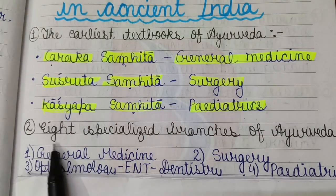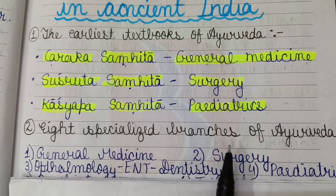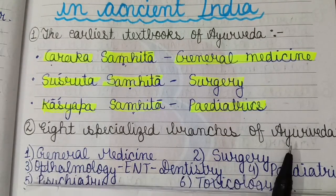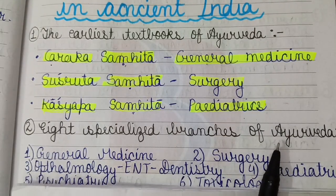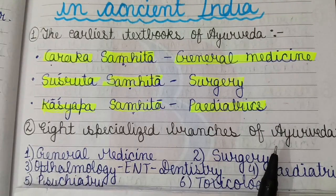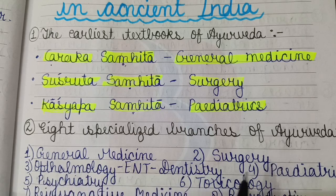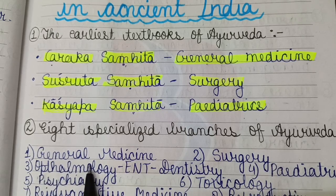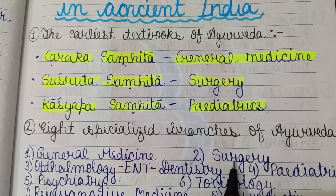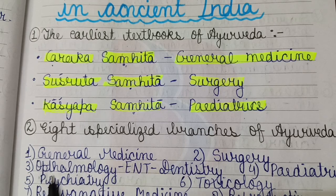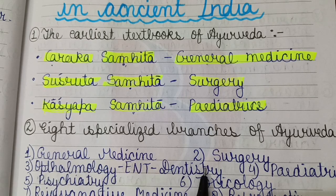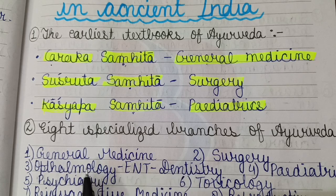The eight specialized branches of Ayurveda: Ayurveda deals with eight branches. First is general medicine. Second is surgery. Next is ophthalmology, ENT, and dentistry — meaning eye, ear, nose, throat, and dentistry.